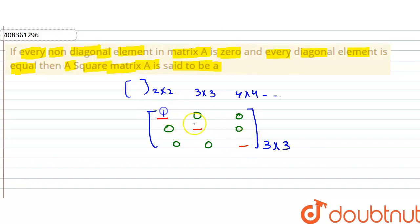So we can do something like 1, 1, 1 on the diagonal, or 2, 2, 2, or 3, 3, 3. So what do we call this matrix? This matrix is called identity matrix, which has all non-diagonal elements 0 and diagonal elements equal. So it is called identity matrix.